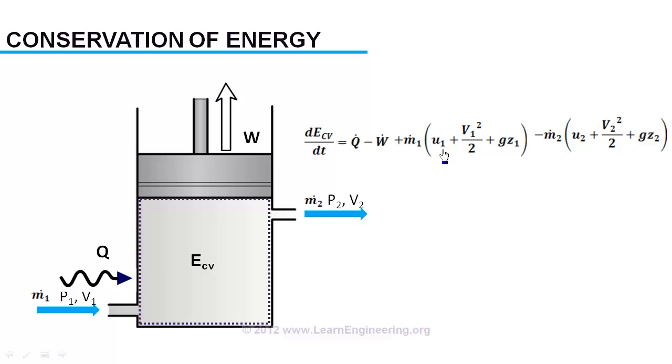The flow stream has three components of energy: internal energy, kinetic energy, and finally potential energy. Z represents the altitude of the flow stream. This equation is the first law of thermodynamics for the open system.